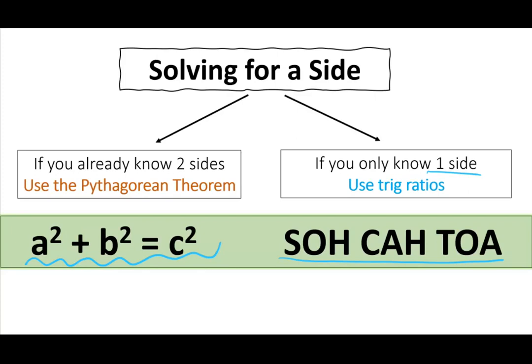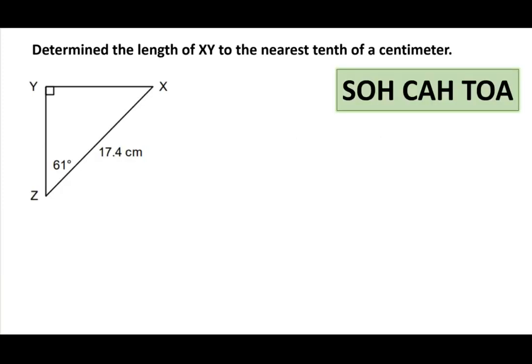Let's do some examples. We have a right triangle and we need to determine the length of XY to the nearest tenth of a centimeter. The first thing we do is label our triangle. The longest side of a triangle is always your hypotenuse. Then we look at our angle — the side that is opposite to the given angle is your opposite side, and the side that is adjacent to your angle, the only side left, is your adjacent.